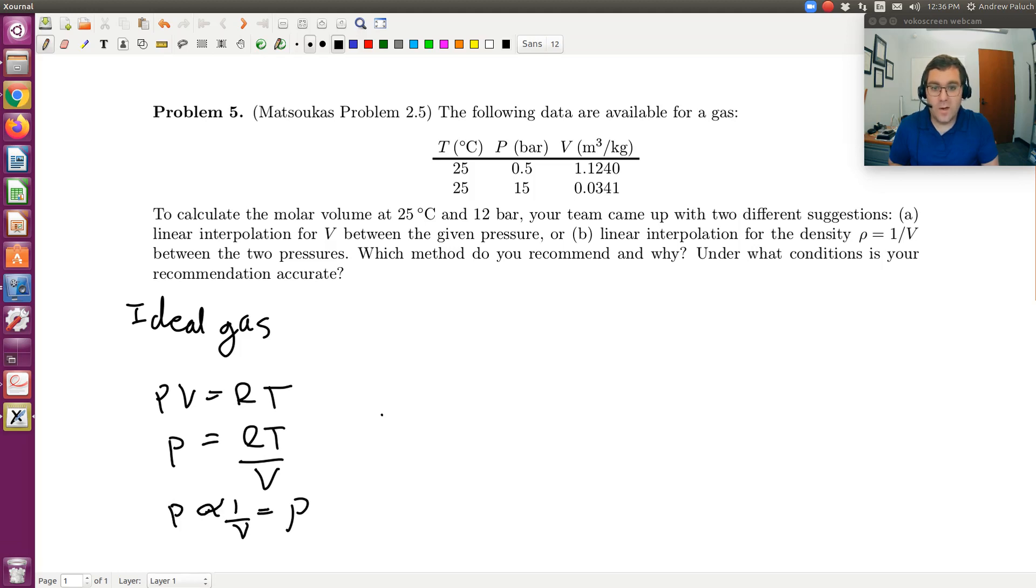So if I were to assume an ideal gas, or just ideal gas equation of state in general, it suggests that P scales with density, so if I were to use linear interpolation, I should interpolate with respect to density and not volume.